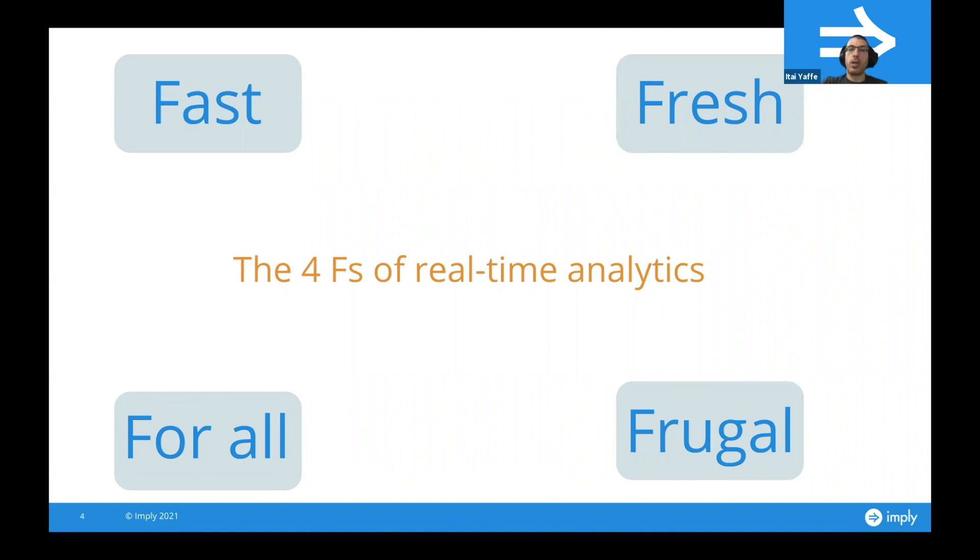Now another thing, and I experienced the same in my previous role at Nielsen, was with concurrency issues. So when you throw a lot of queries in parallel on the system, it can bring the system down. So it's not necessarily built for that high concurrency for analytics purposes. So we covered Fast, Fresh, and For All, and let's talk about Frugal.